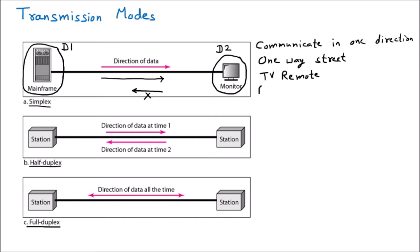In simplex, the roles of transmitter and receiver are fixed. The transmitter knows it is going to send only, and the receiver knows it has to receive only — there is no clash. This type of technology we rarely use; it is mainly found in TV remotes, car remotes, and similar devices — one-way transmission only.